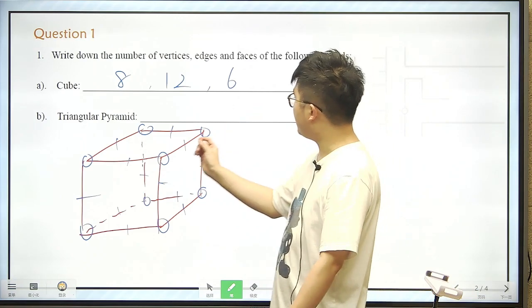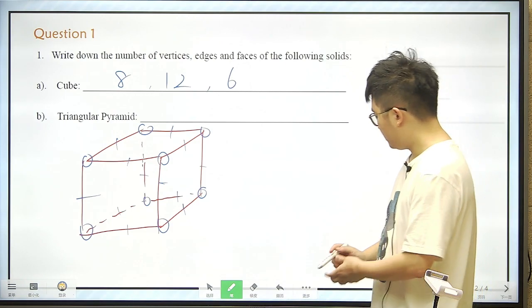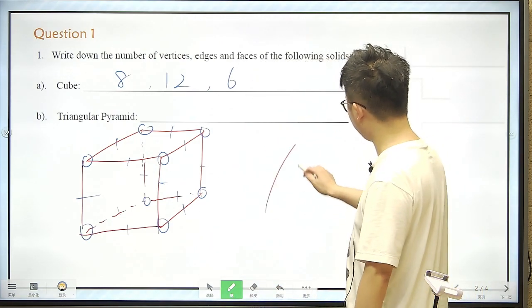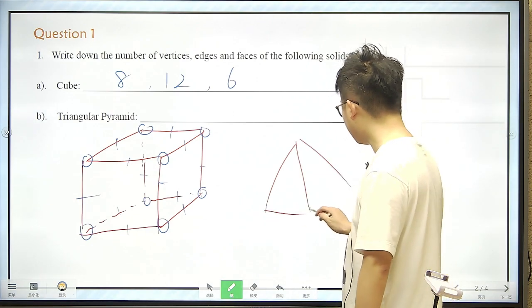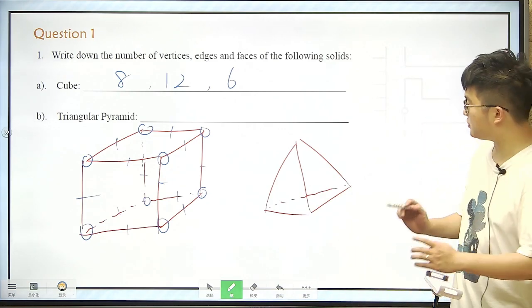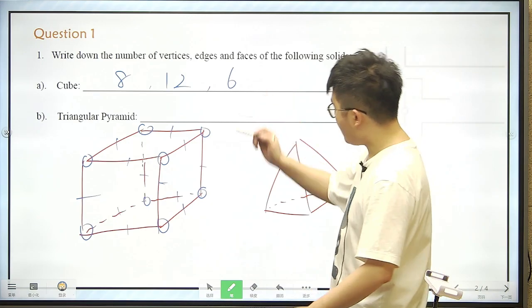Now the second solid would be triangular pyramid. So triangular pyramid looks like this. They have 3 edges. And the bottom looks like a triangle. This is a triangular pyramid.